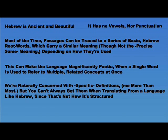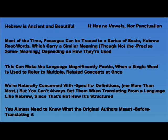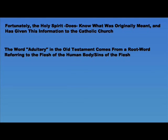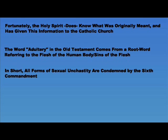Now, we in the Western world are very concerned with specific definitions, and I'm probably more concerned with that than most. But it isn't always possible to do this when translating from a language like Hebrew, due to the structure of the language. You almost need to already know what the original authors meant to say before you translate it. Fortunately, the Holy Spirit does know what the original authors meant to say, and has given this information to the Catholic Church. The Church has taught consistently that the word adultery used in the Old Testament comes from a root word referring to the flesh of the human body and sins of that flesh. In other words, any form of sexual unchastity is condemned by the Sixth Commandment.